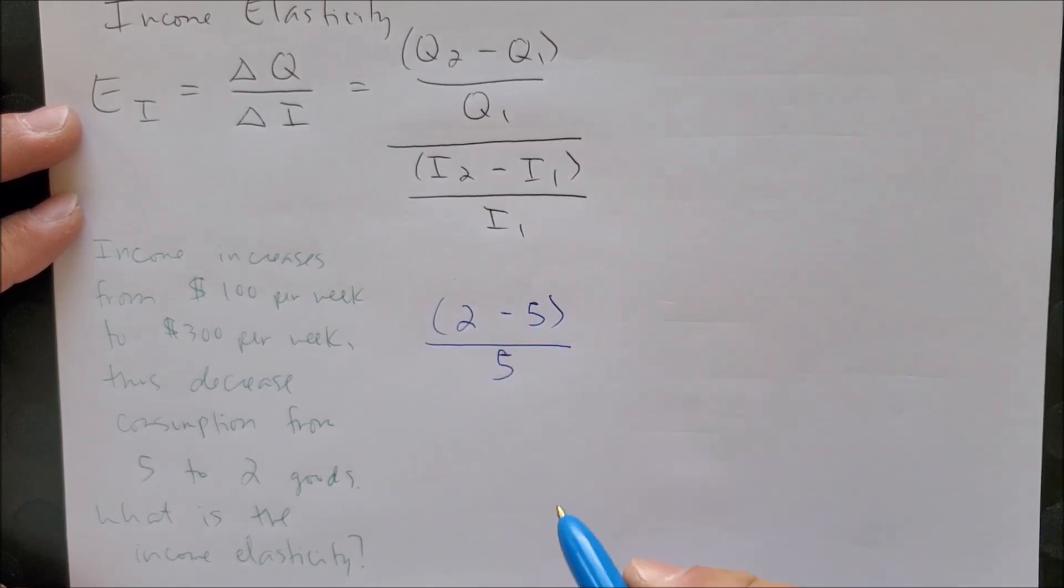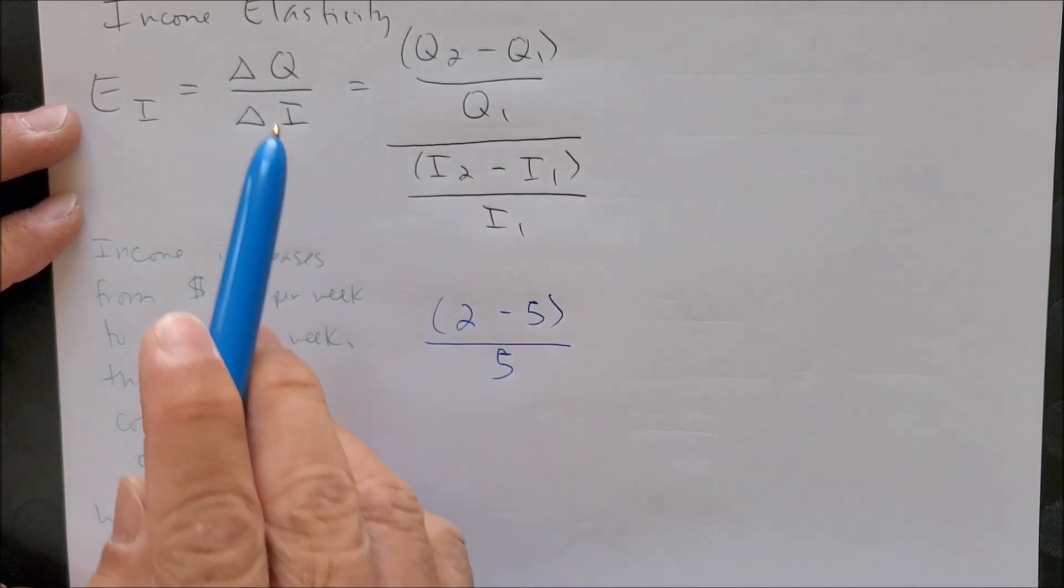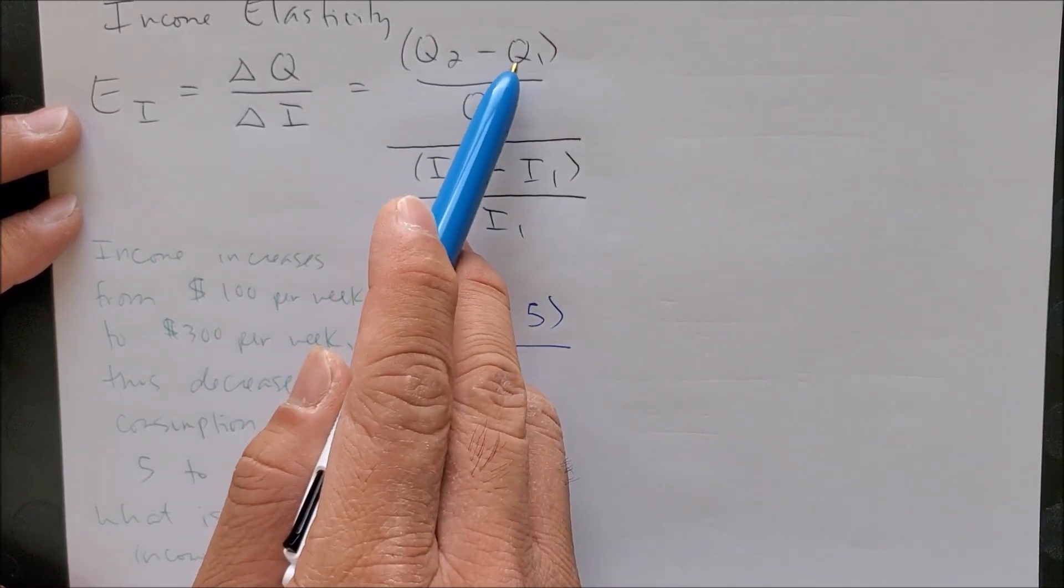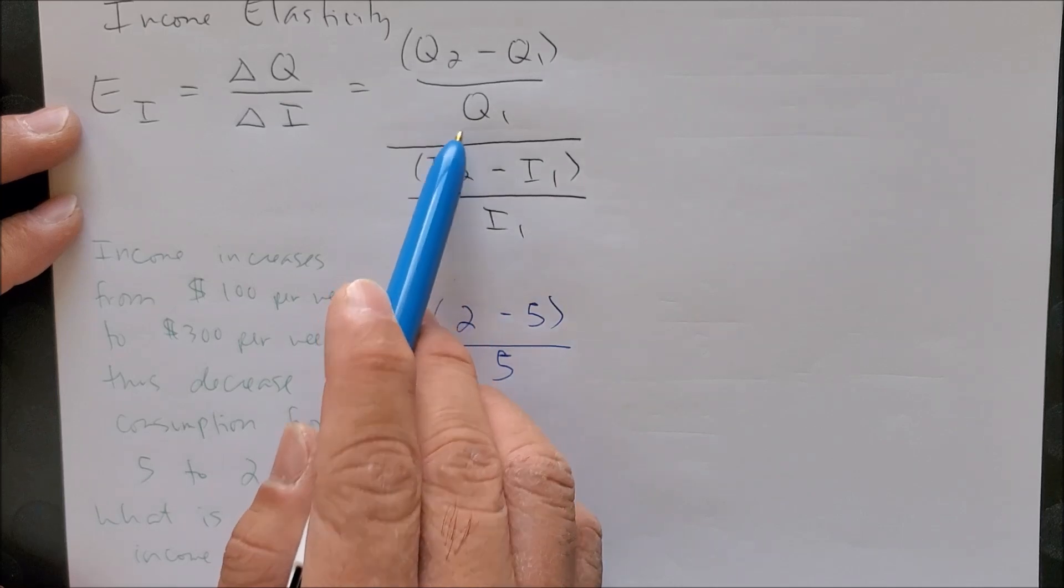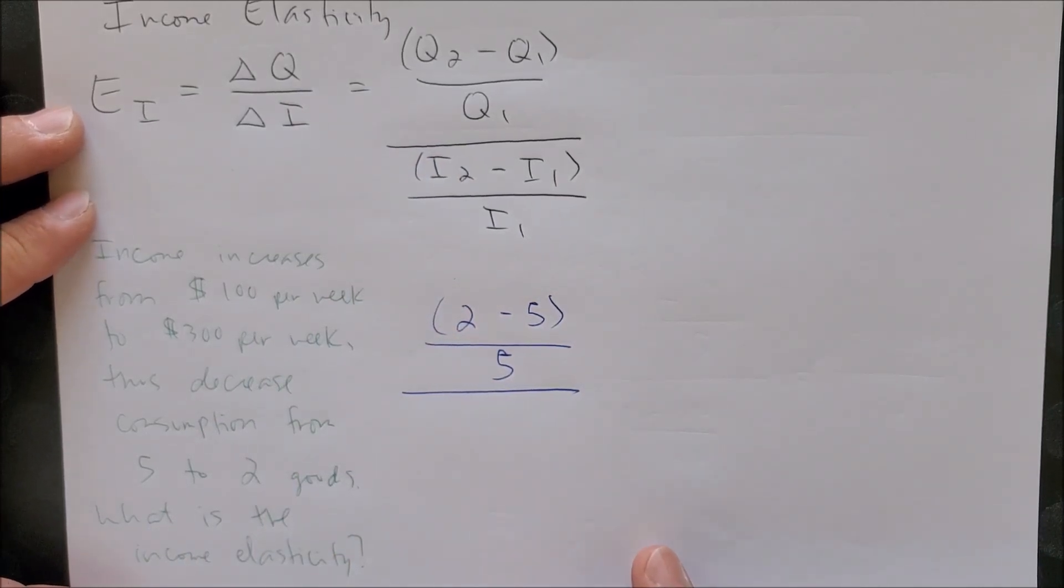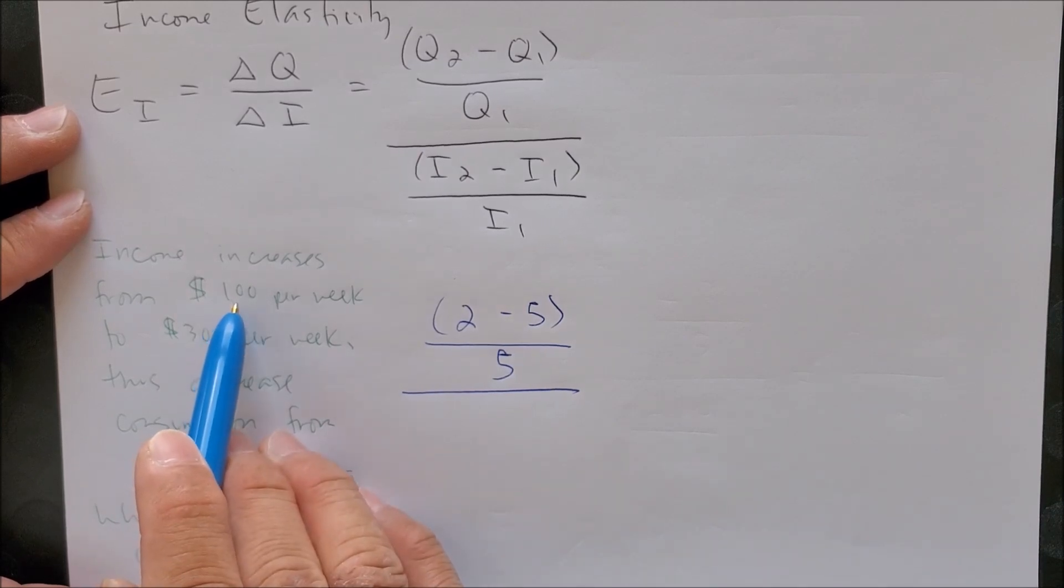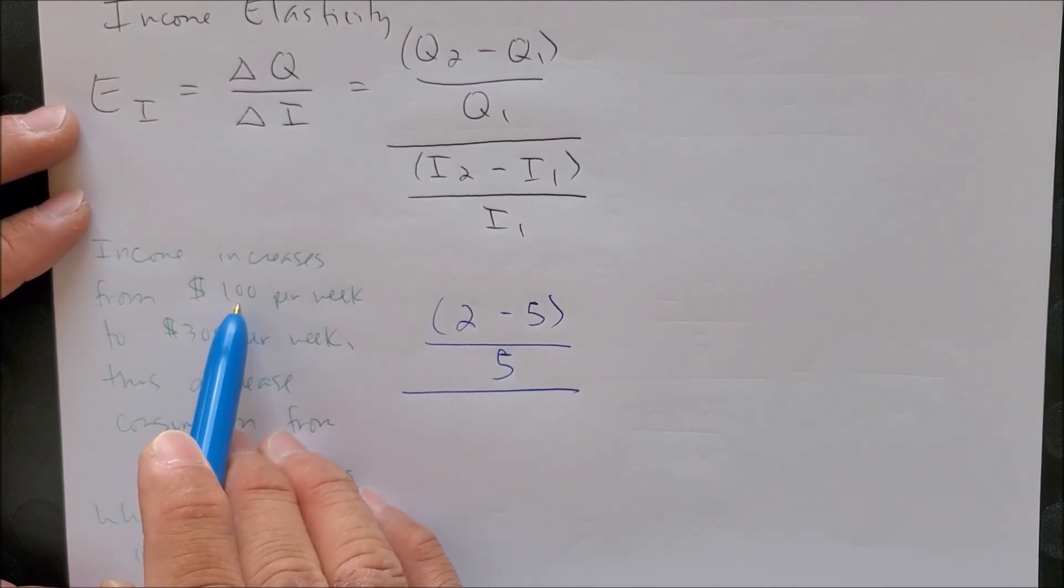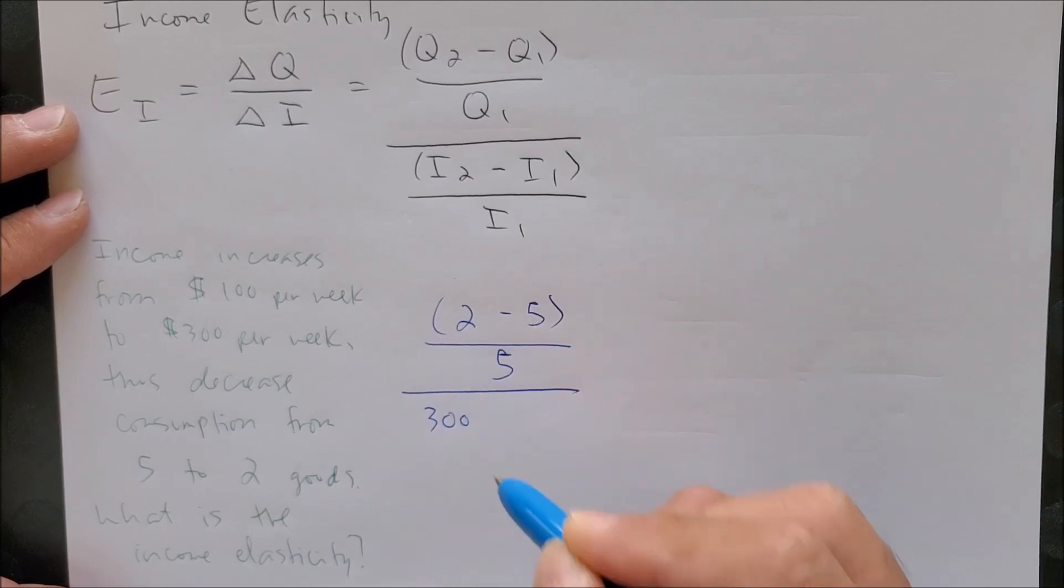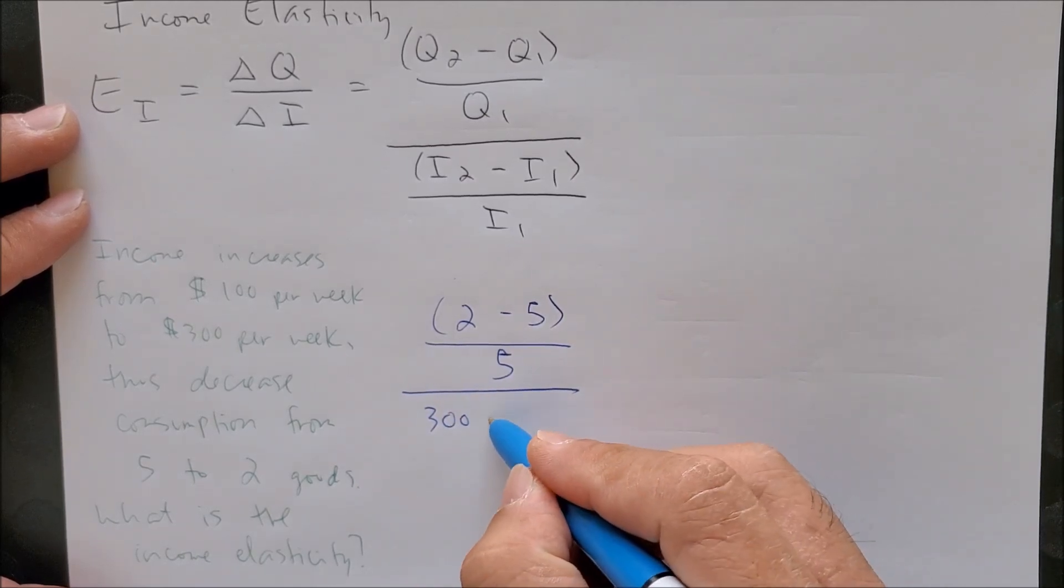We have the new quantity Q2 which represents 2, and 5 which represents Q1. And if we plug in that equation, we're gonna have 2 (Q2) minus 5 (Q1) over Q1 of 5.